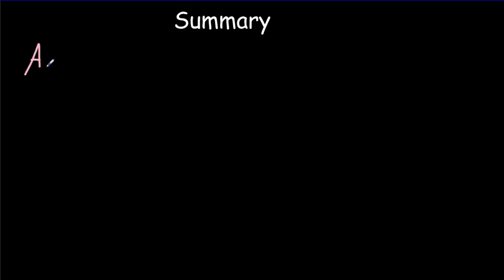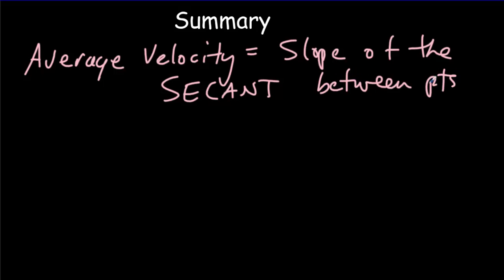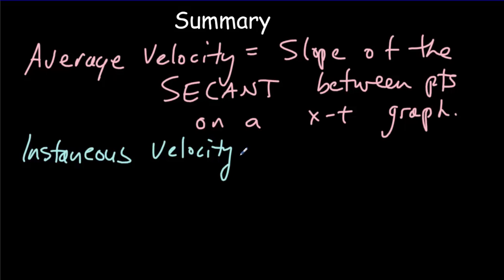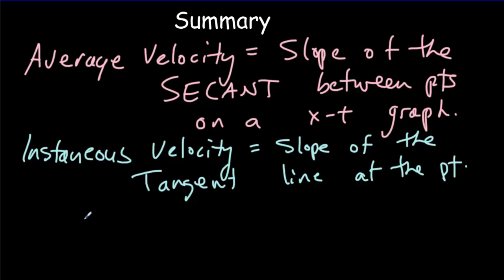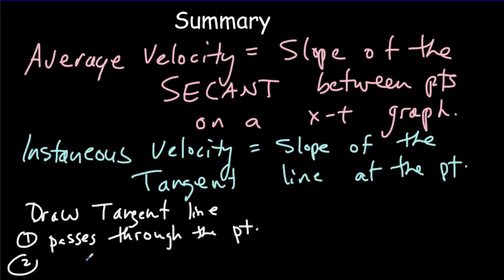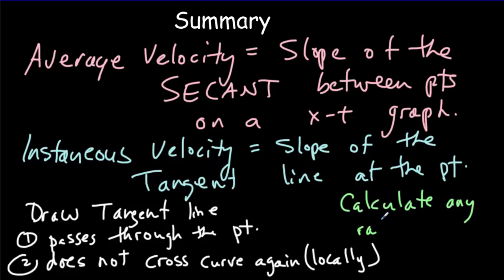So summarizing the key points from the video, we first of all talked about average velocity and how it was equal to the slope of the secant between points on a position-time graph. We then talked about instantaneous velocity, the velocity at a particular instant in time, and it would equal the slope of the tangent line at the point. We had a few rules for drawing tangent lines. One, it's a straight line that passes through the point. And two, it doesn't cross the curve locally again. It only goes through that point. And then our final point was that we could calculate any rate from a tangent line. So power is the rate at which energy is used. So if we had a graph of energy versus time, we could do a tangent line to find out the instantaneous use of power.